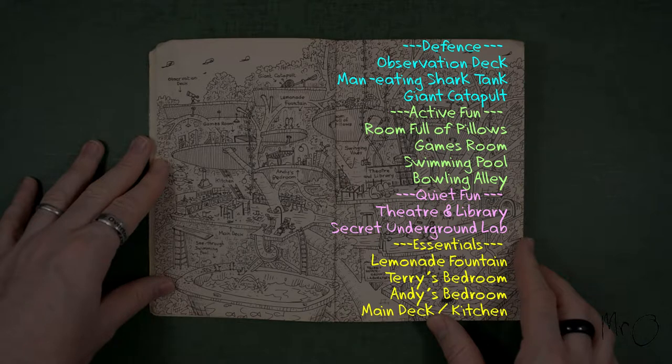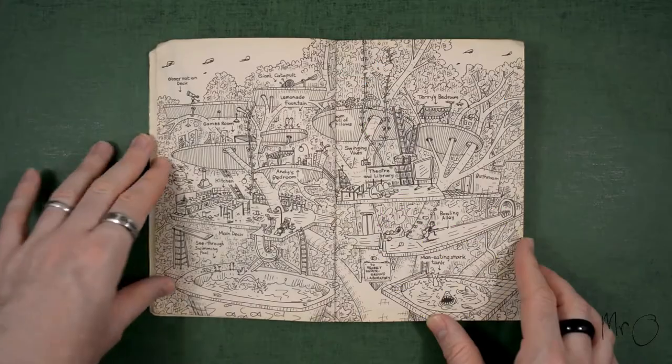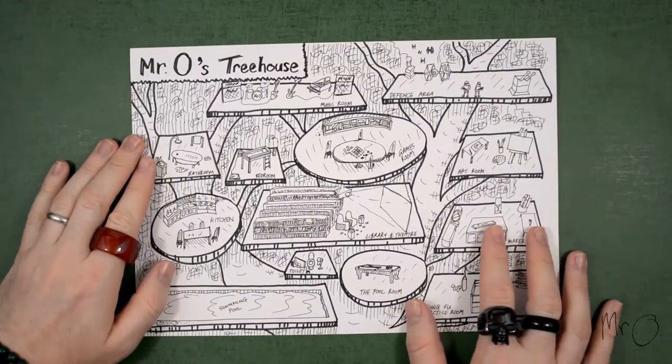After that, I used these four categories to decide what I wanted to have in my treehouse. And this is what I came up with. Let me go through room by room.